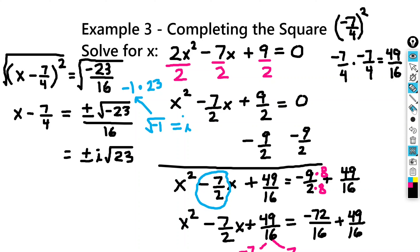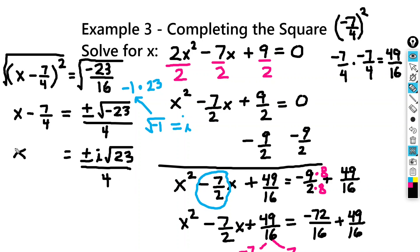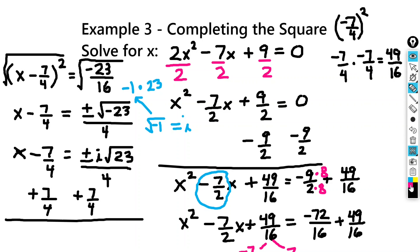I made a little mistake there pulling that out, but this denominator here is going to be 4, because the square root of 16 is 4. So it's going to be over 4. And we've got x minus 7 fourths, so we're going to add 7 fourths to both sides. When we do that on the left-hand side, the 7 fourths will cancel.